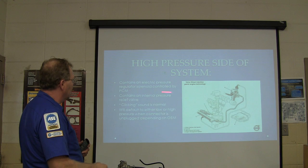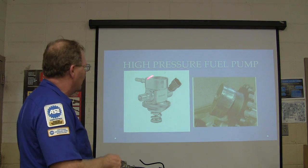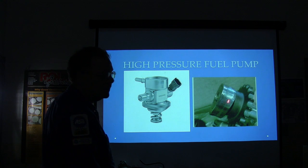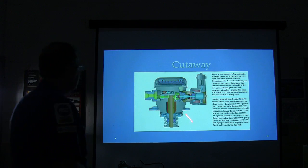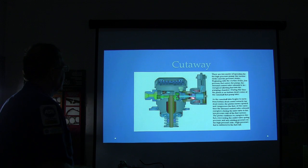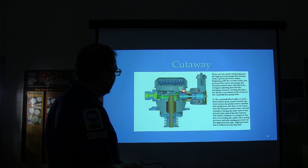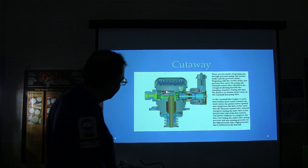The pump has an internal relief valve and produces a clicking sound — normal for a pump cycling between higher and lower pressure. Looking at the pump internals: there's a plunger and a solenoid. Depending on how it's connected, it defaults to high or low pressure. As the plunger bounces on the cam lobes, it generates high pressure, and a check ball keeps that high pressure on the fuel rail. The fuel rail is maintained at high pressure.